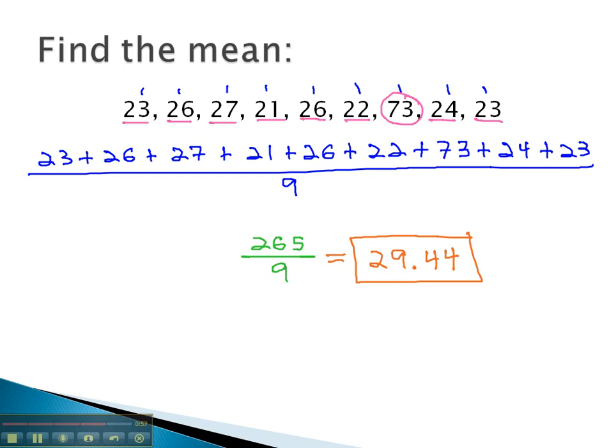It turns out that when we have 1 or 2 values that are way out there, far from the other values, it kind of throws the mean off. 29's not a real good middle number when we have just one weird number. So there might be a different type of average that might be better to use than the mean for this set of data. But we'll look at that in a different video.